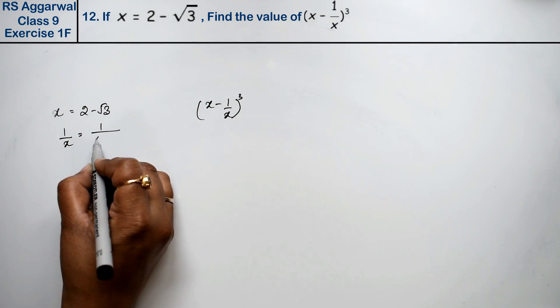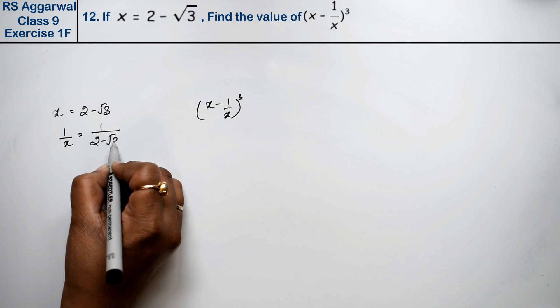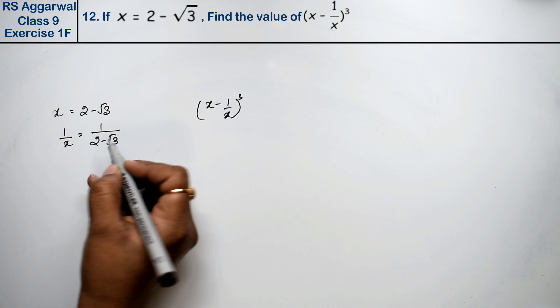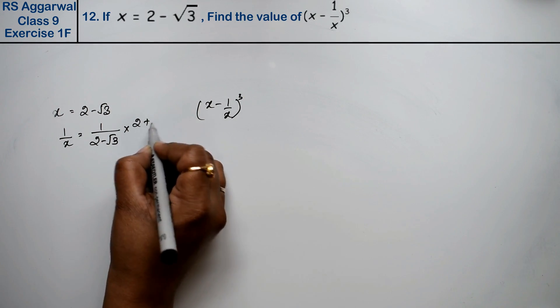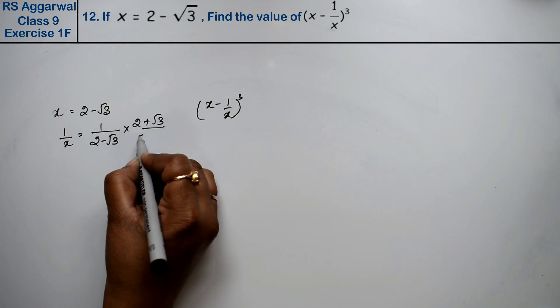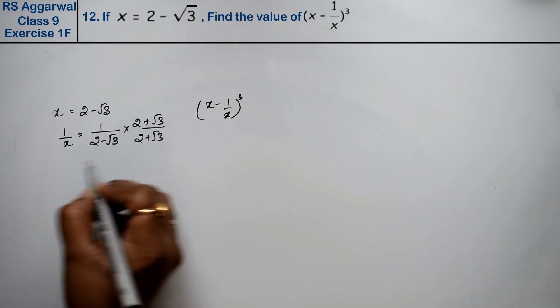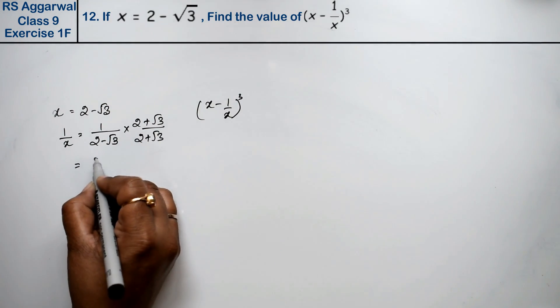How do we calculate it? 1/x equals 1 upon 2 minus root 3. Put x value in denominator. Now we'll rationalize this by multiplying 2 plus root 3 upon 2 plus root 3. One multiplied gives as it is.